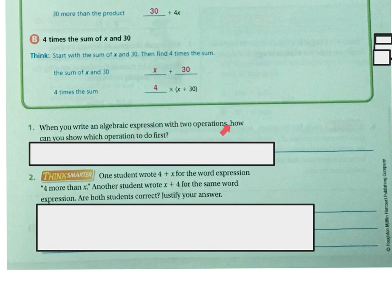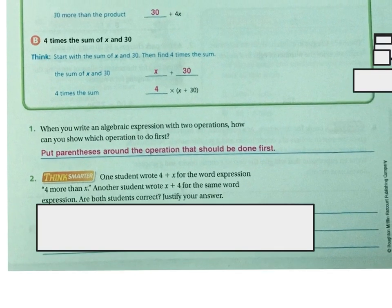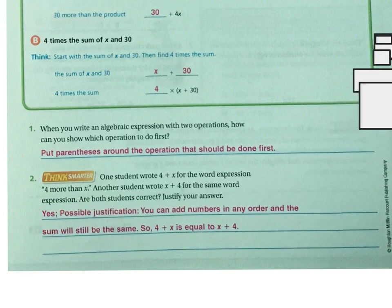When you write an algebraic expression with two operations, how can you show which operation to do first? Put parentheses around the operation that should be done first. Next question: one student wrote 4 plus X for '4 more than X,' and another wrote X plus 4. Are both correct? Yes. You can add numbers in any order and the sum will be the same. So 4 plus X equals X plus 4. You can also do that with multiplication. However, you cannot do that with division or subtraction—order matters.